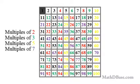Then, beginning at 7, color every seventh number in purple — 14, 21, 28, 35, etc., to 98. These numbers are all multiples of 7.